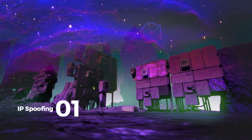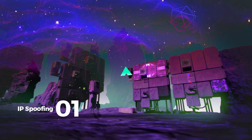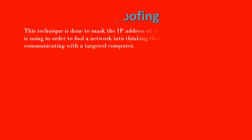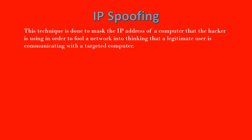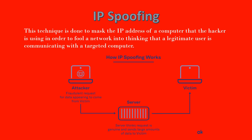The first is IP spoofing. This technique is done to mask the IP address of a computer that the hacker is using, in order to fool a network into thinking that a legitimate user is communicating with a targeted computer. To do this, a hacker imitates another IP address or range to meet the IP address criteria set by a network administrator.